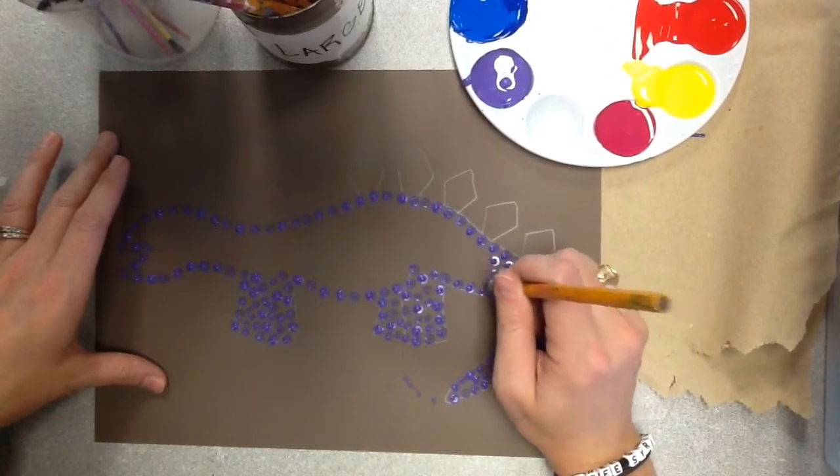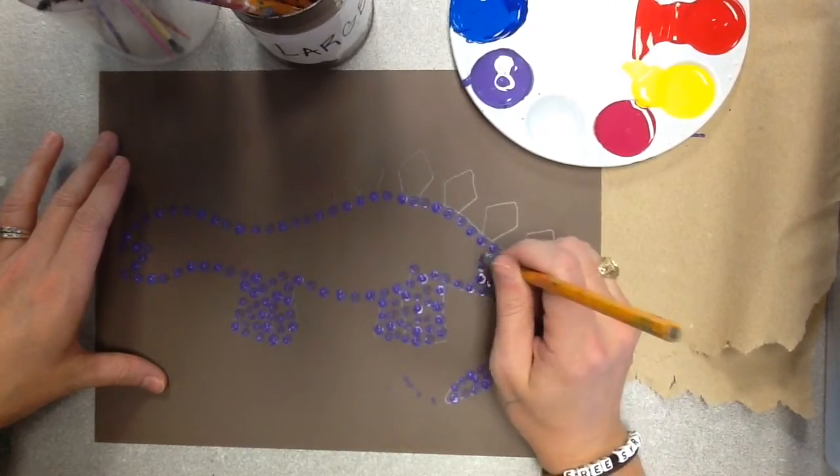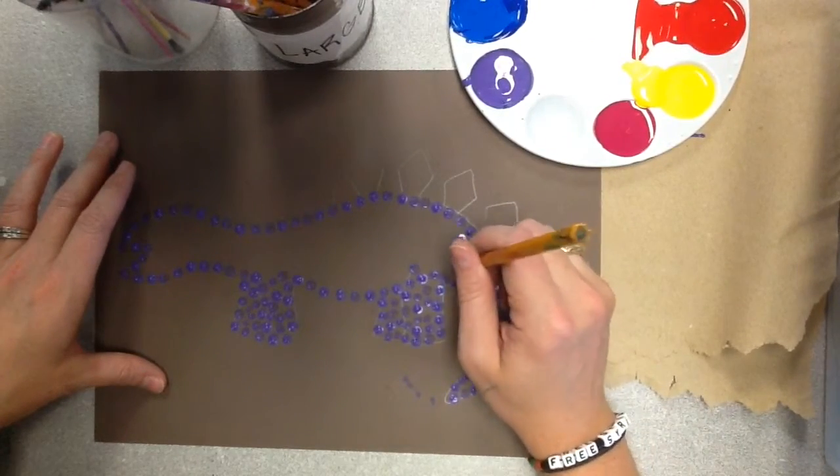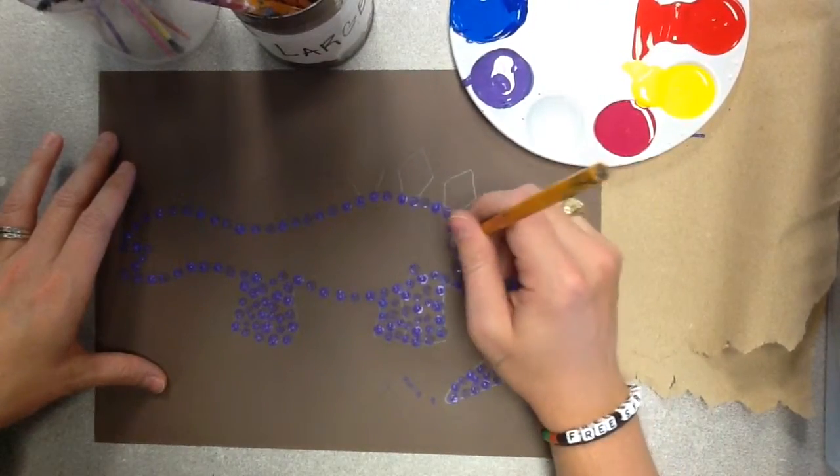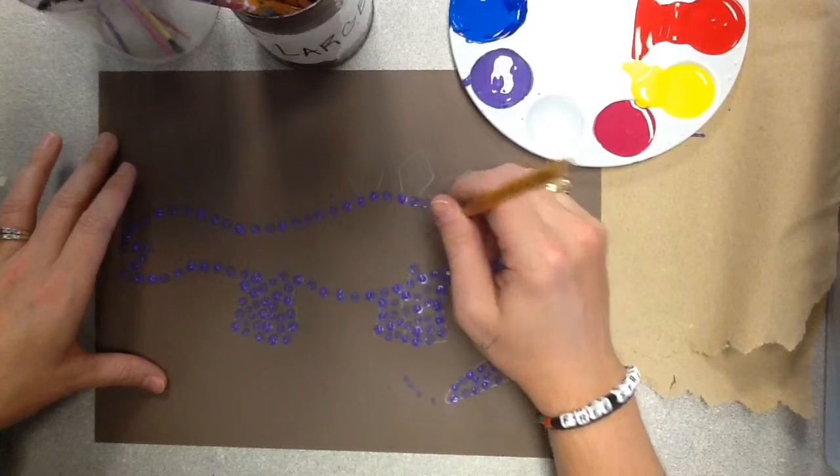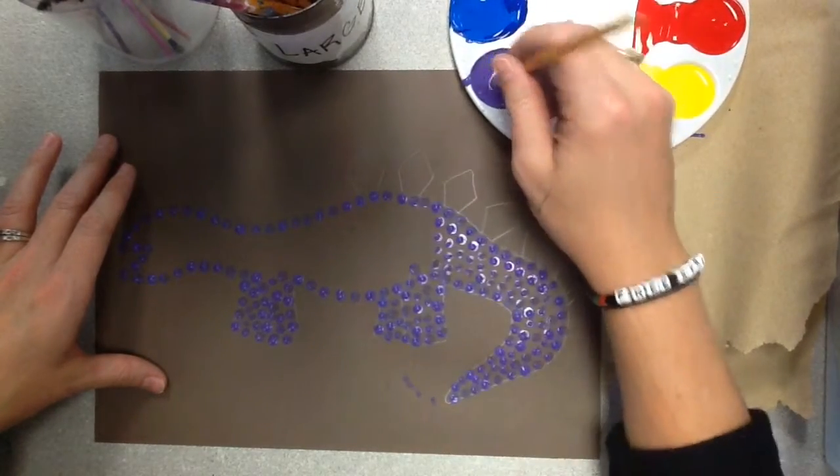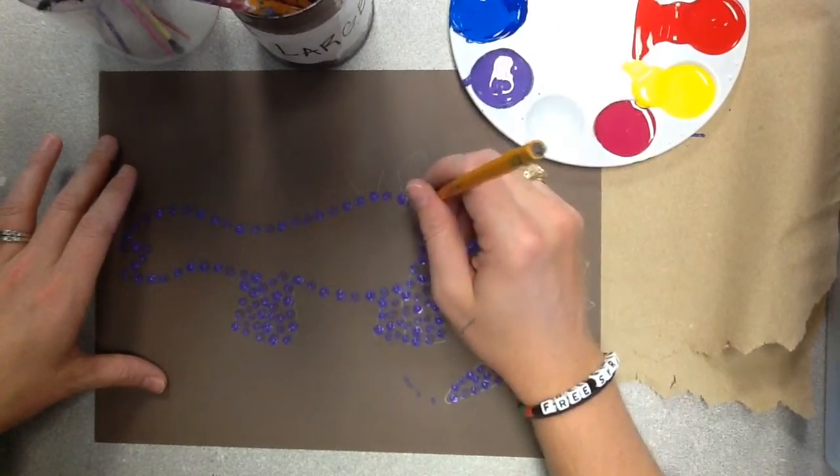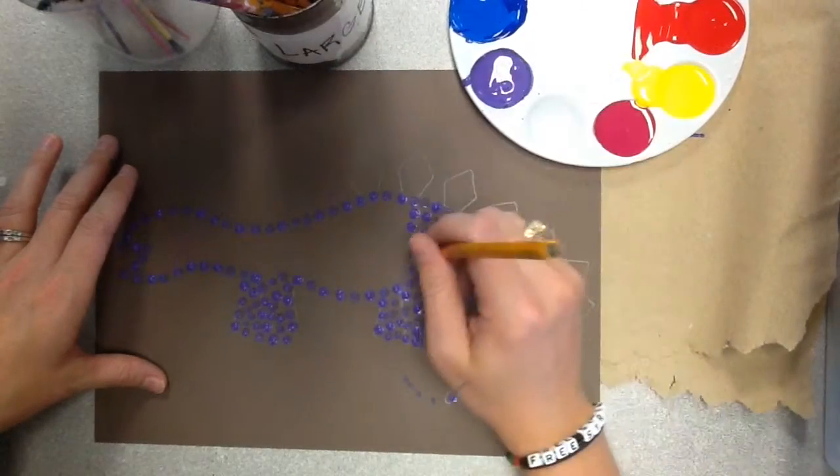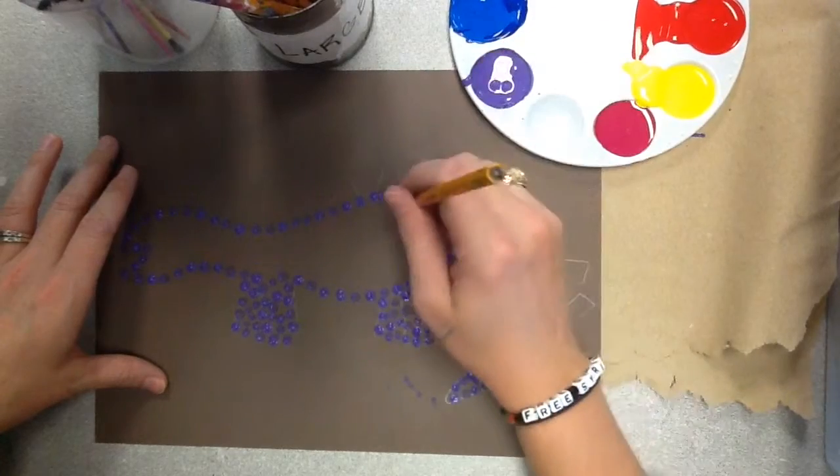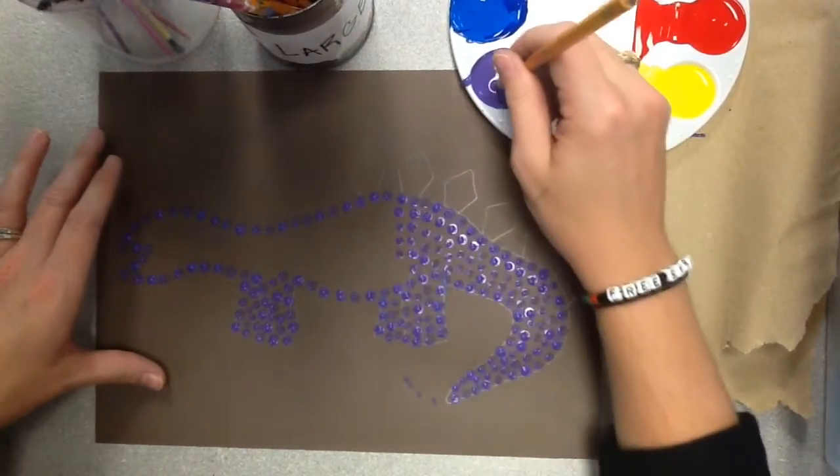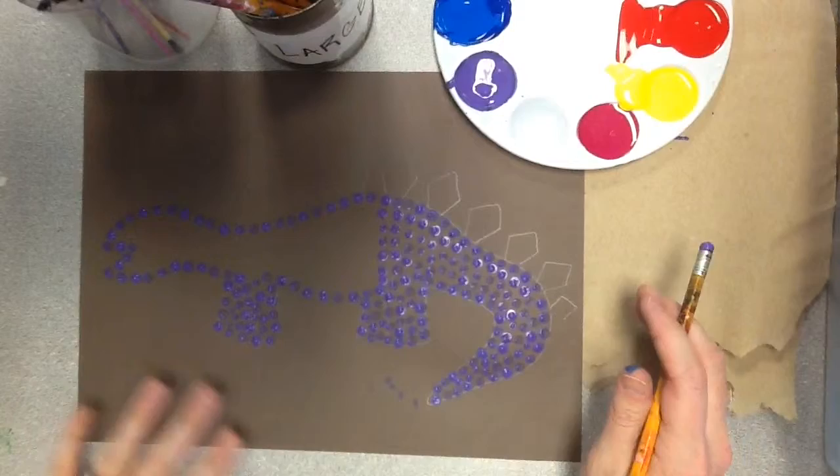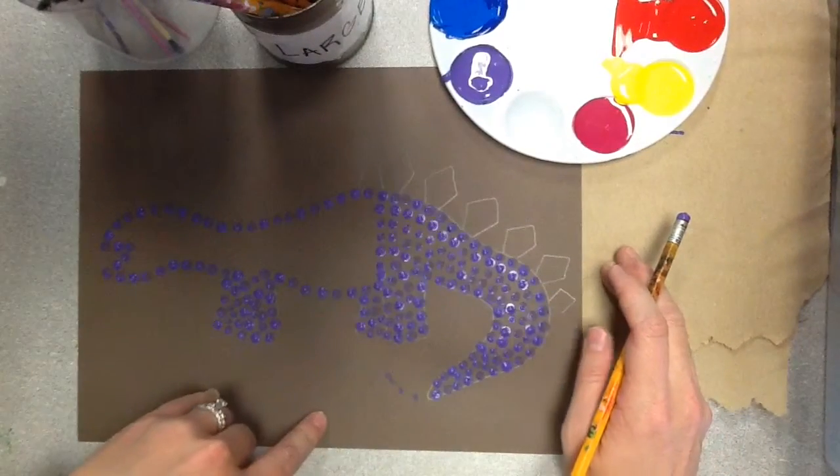Okay, so notice how I'm kind of just going about this in a row each time instead of just randomly putting dots in there, because if you just start randomly putting dots, it ends up looking kind of sloppy. So you really want to take your time and go in a row and keep things all together. All right, I'm going to go ahead and stop there in the dinosaur for now, just because I want to talk to you a little bit about background.